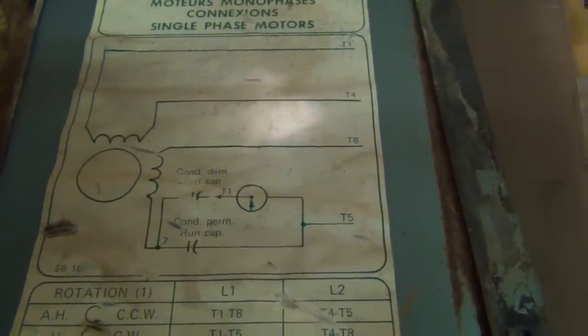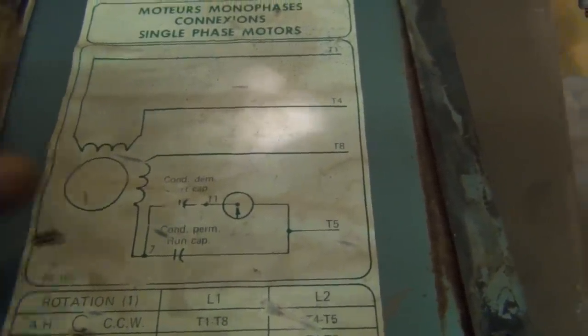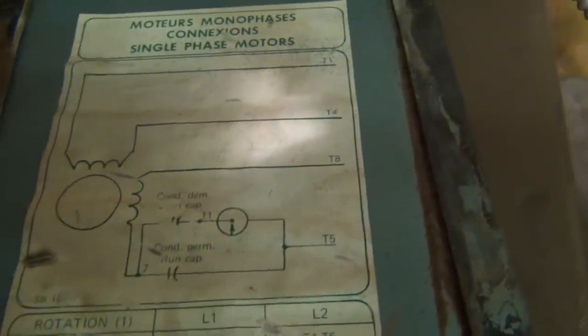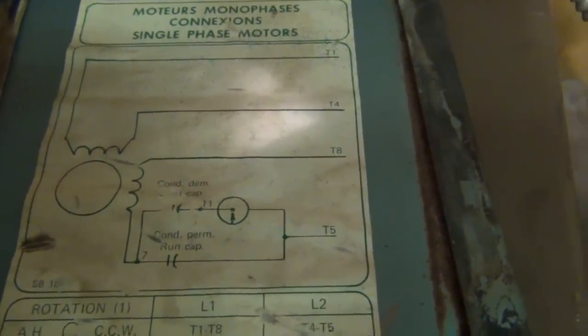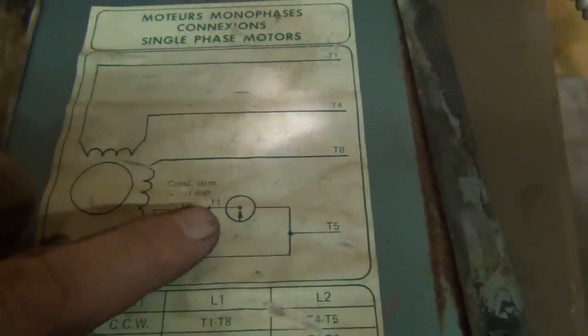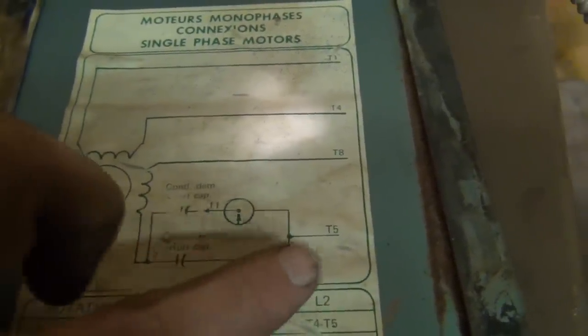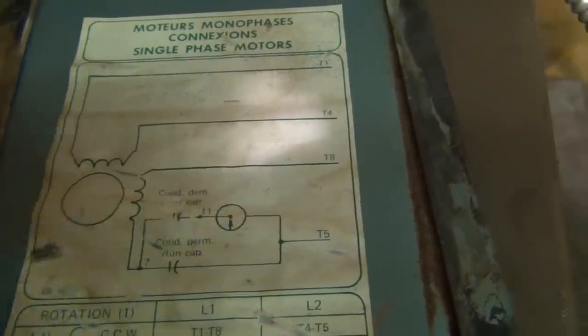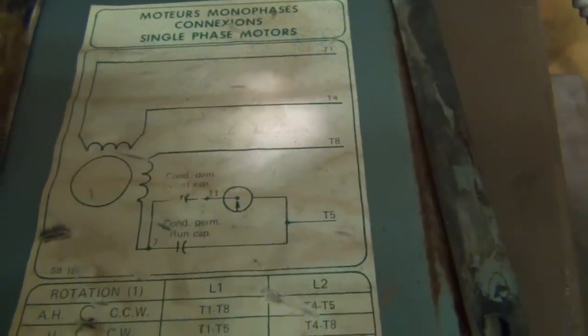So actually, what I might do is, probably easiest to actually test this inertia switch first. Just because I got some labels right here, I got number 11 and T5, I can probably undo those wires and put an ohmmeter right across it.